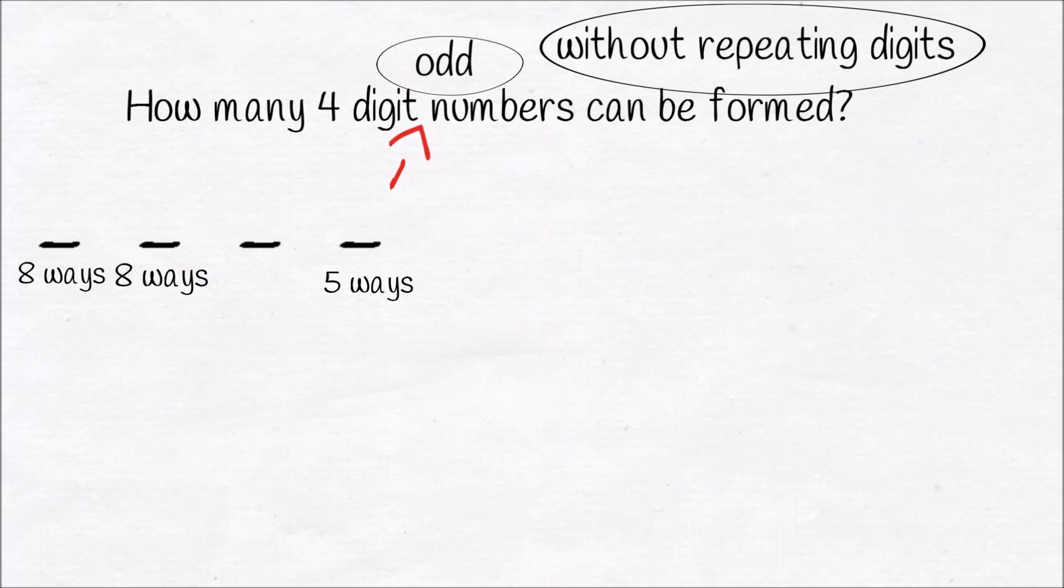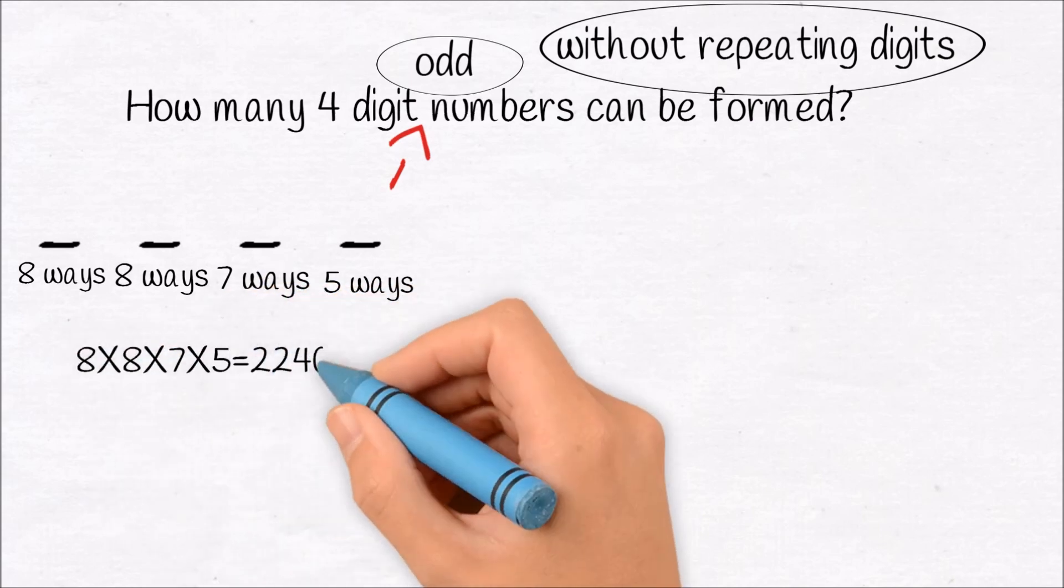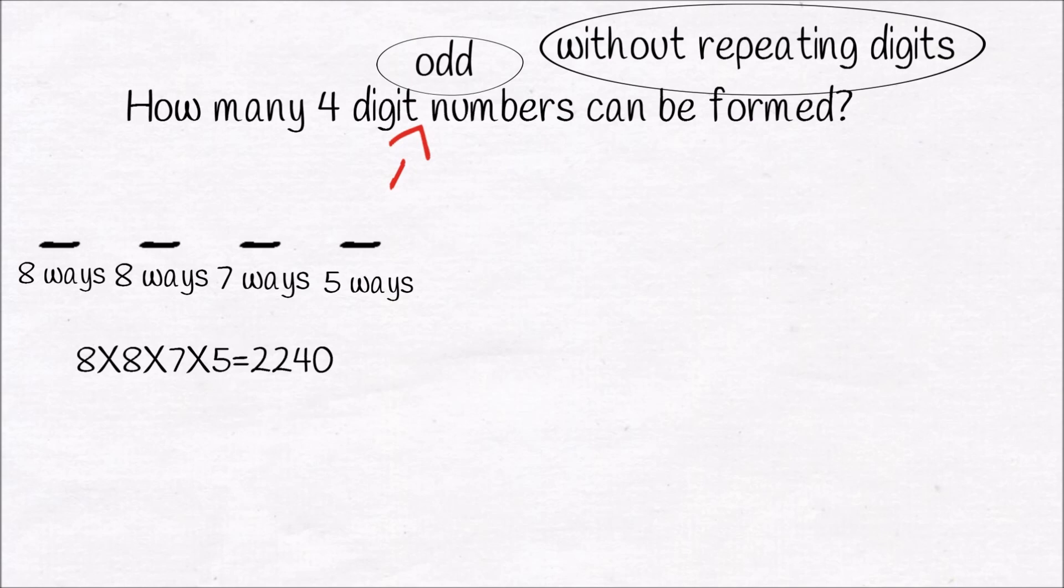Similarly, the 10th position can be filled by 7 different ways. So total odd number digits where numbers are not repeated can be obtained by multiplying 8 into 8 into 7 into 5, which is 2240.